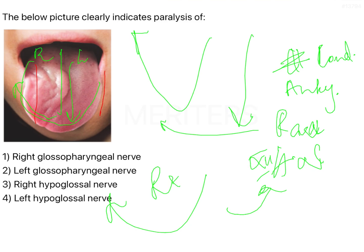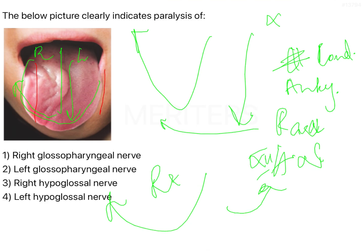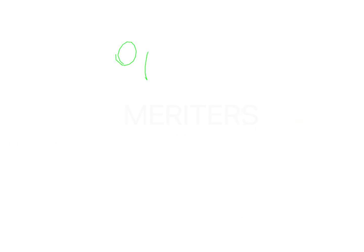Conversely, when you have paralysis of your vagus nerve, the entire uvula is pushed to the opposite side. So, for the vagus nerve, it is the opposite side. If my right vagus is paralyzed, the uvula will be pushed to the left side. Why? Because the right side muscles are not working; however, the left side muscles are working and they are pulling the entire uvula towards that side.